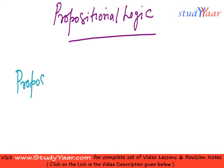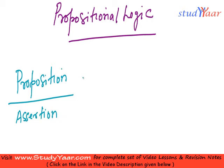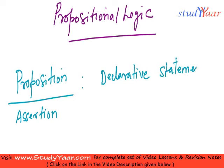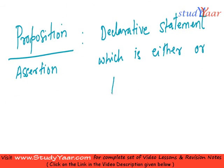A proposition, also called an assertion, is basically a declarative statement which is either true or false — but not both. So it should be either true or false, but not both.